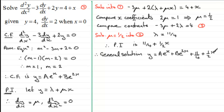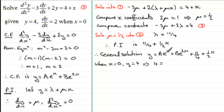Now we need to figure out what constants a and b are going to be — and that's where the boundary conditions come into play. We know that when x equals 0, y equals 4. Substituting these values into the general solution gives us: 4 equals a plus b plus 11 quarters. We have two unknowns, so we can't solve it immediately. Let's call this equation 3.